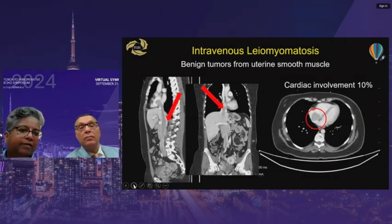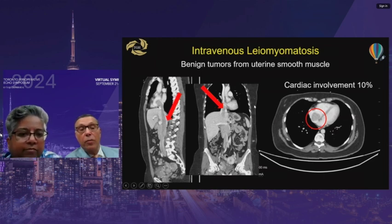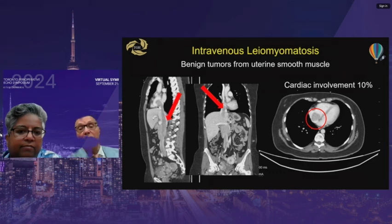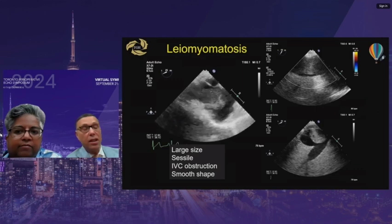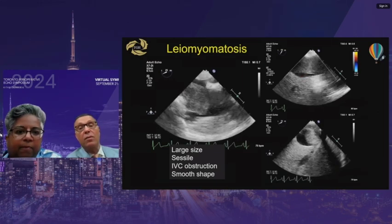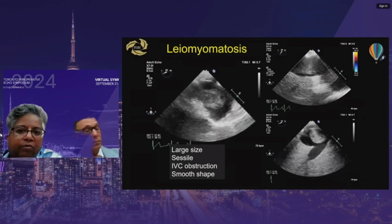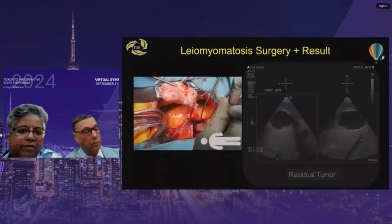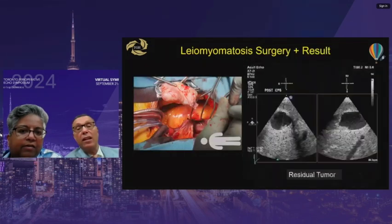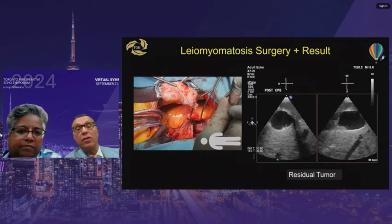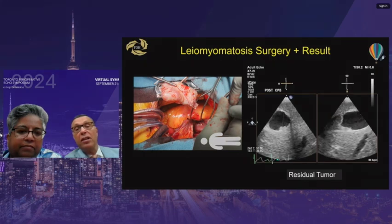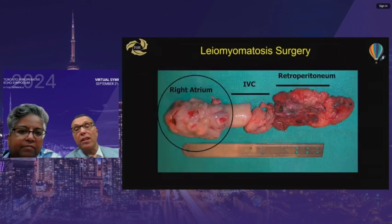Another patient shows an abnormal uterus on CT extending through the IVC and into the heart — intravenous leiomyomatosis traveling via the ovarian vein. On echo, it's seen coming up the IVC into the right atrium, filling but not totally obstructing the IVC. The approach at Toronto General is now a staged procedure: the cardiac surgeon resects the intracardiac portion first, then the gynecologist removes the rest.